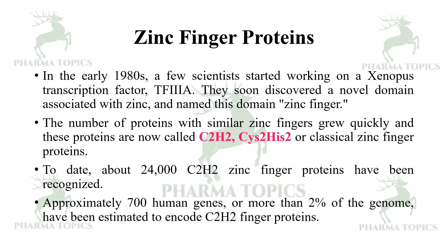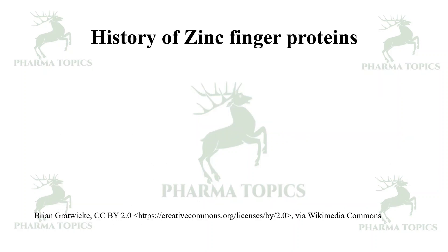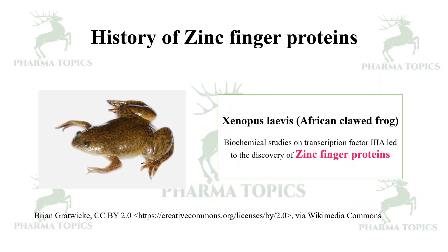To date, about 24,000 C2H2 zinc finger proteins have been recognized. Approximately 700 human genes, or more than two percent of the genome, have been estimated to encode C2H2 zinc finger proteins. This was obtained from Xenopus laevis, the African clawed frog, where biochemical studies on transcription factor TFIIIA led to the discovery of zinc finger proteins.